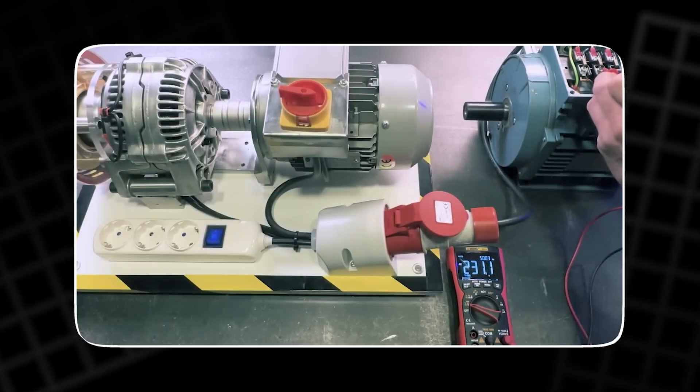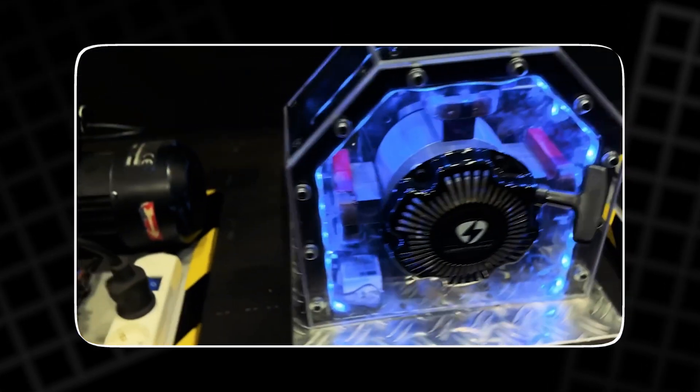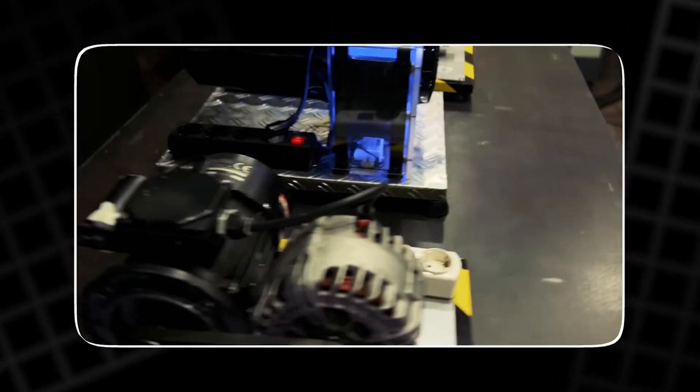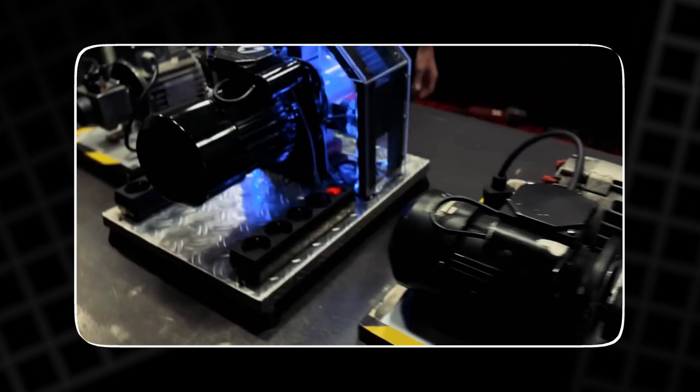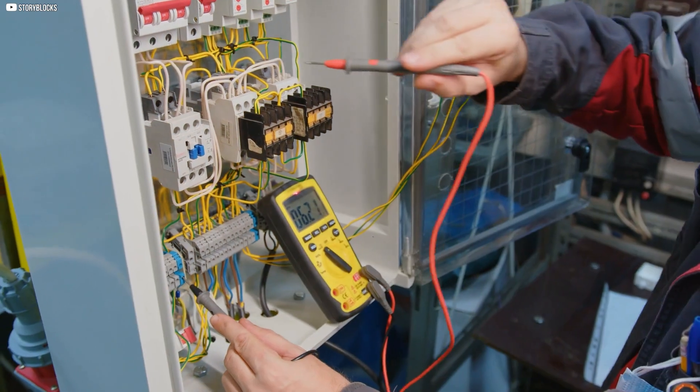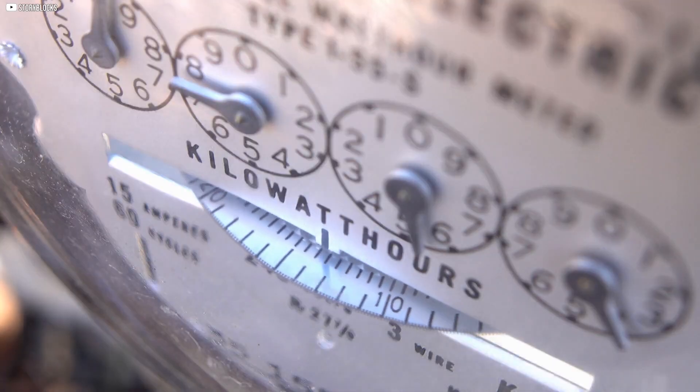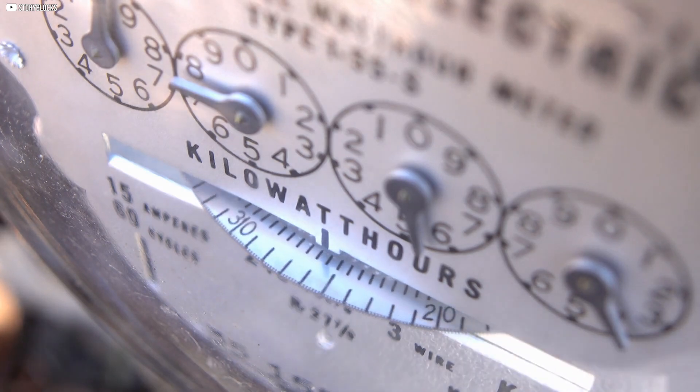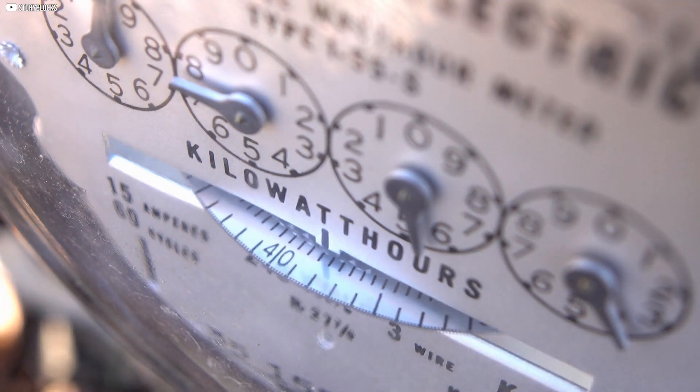But every part is intentional. The power source? A 24-volt DC, 100-amp truck alternator. Heavy-duty, built to last, and capable of serious current. It's not a typical choice for home inventors, but here it plays a vital role in converting mechanical rotation into electrical output.